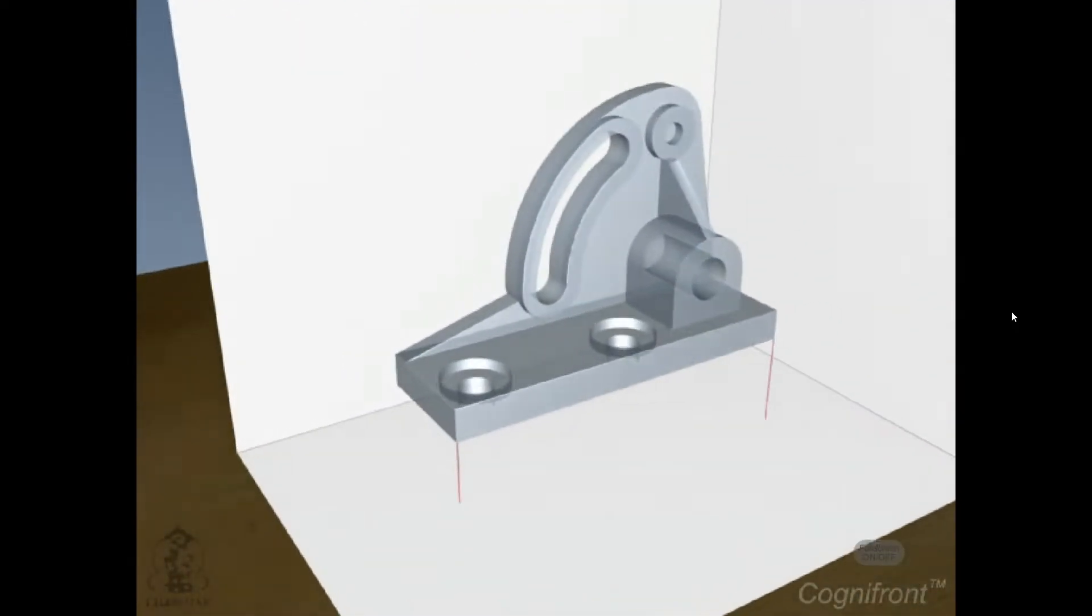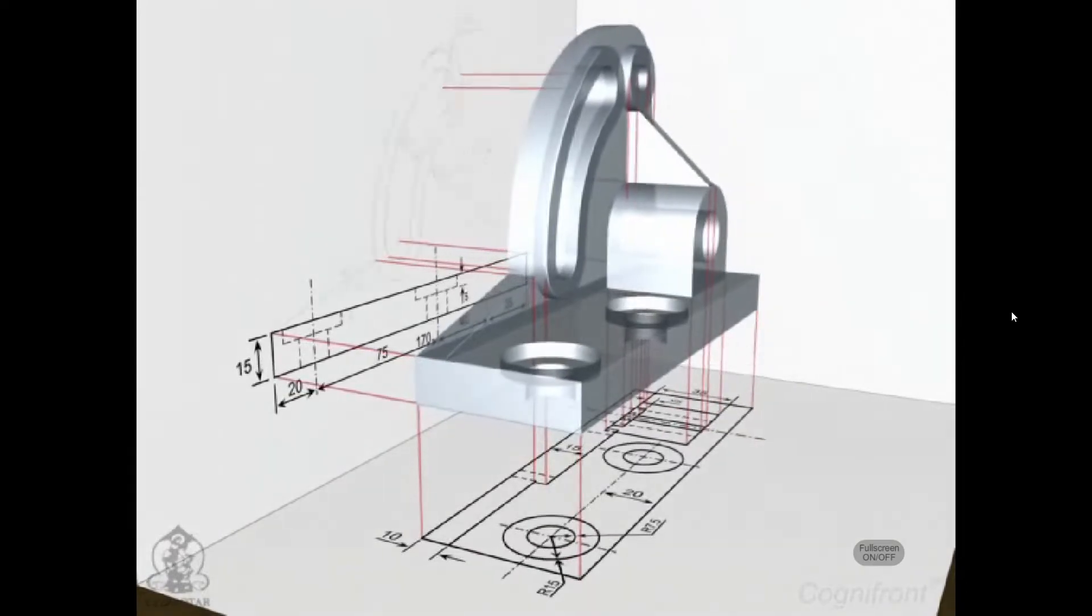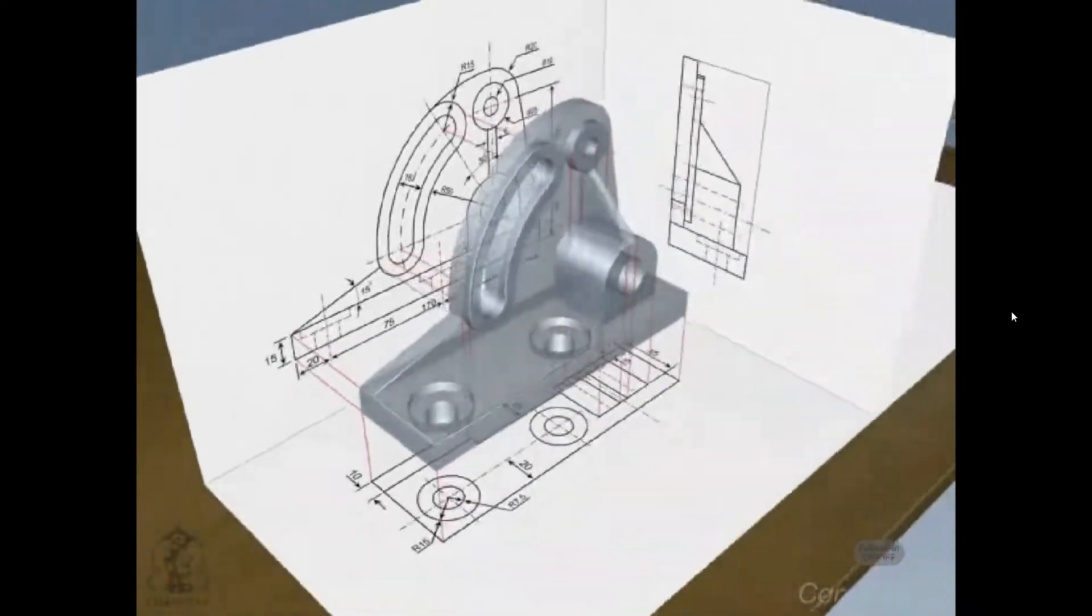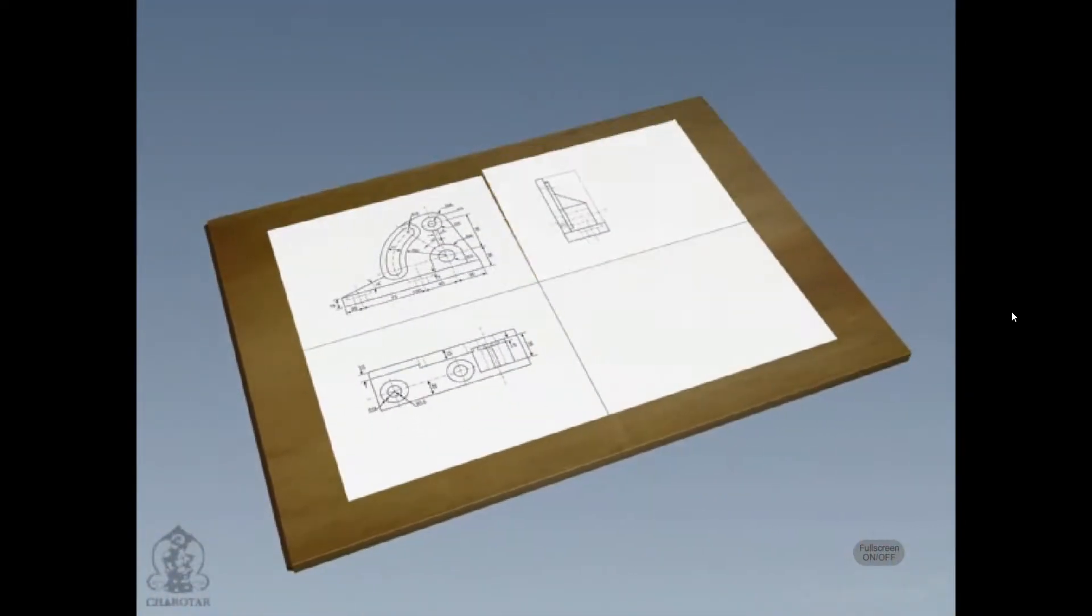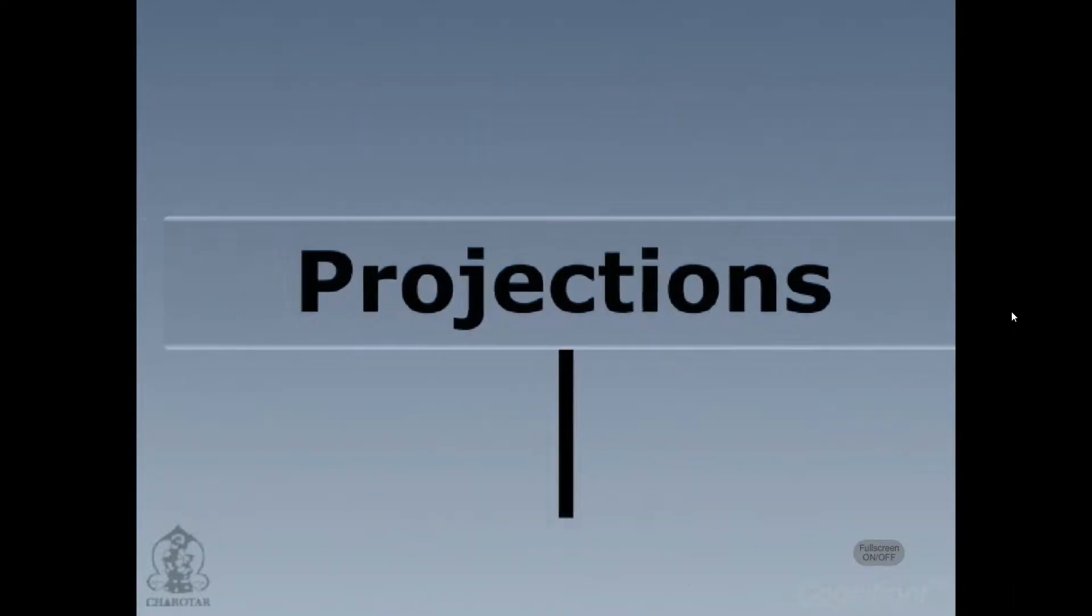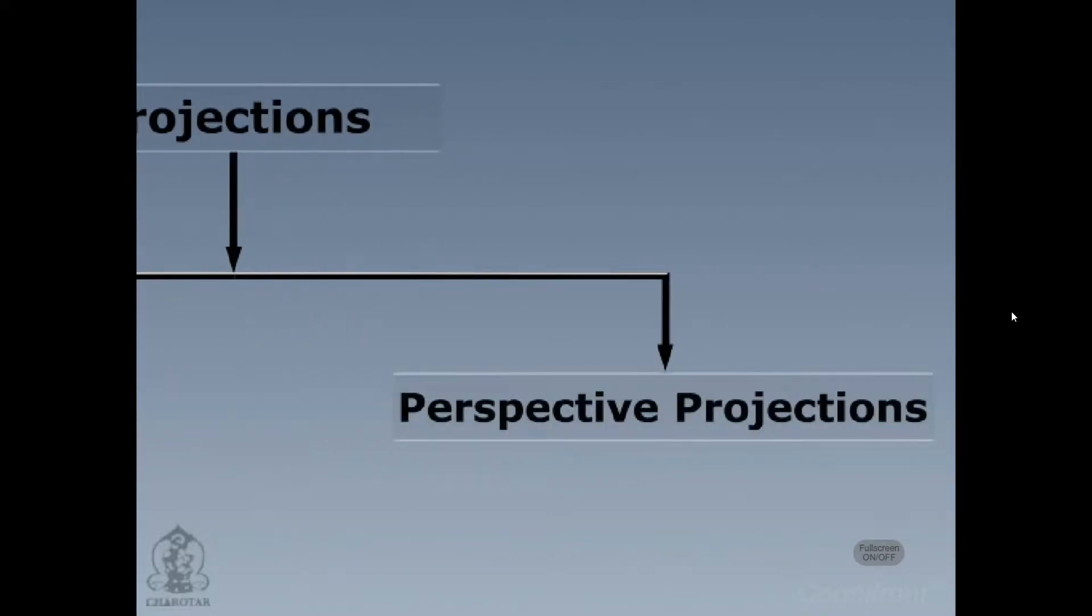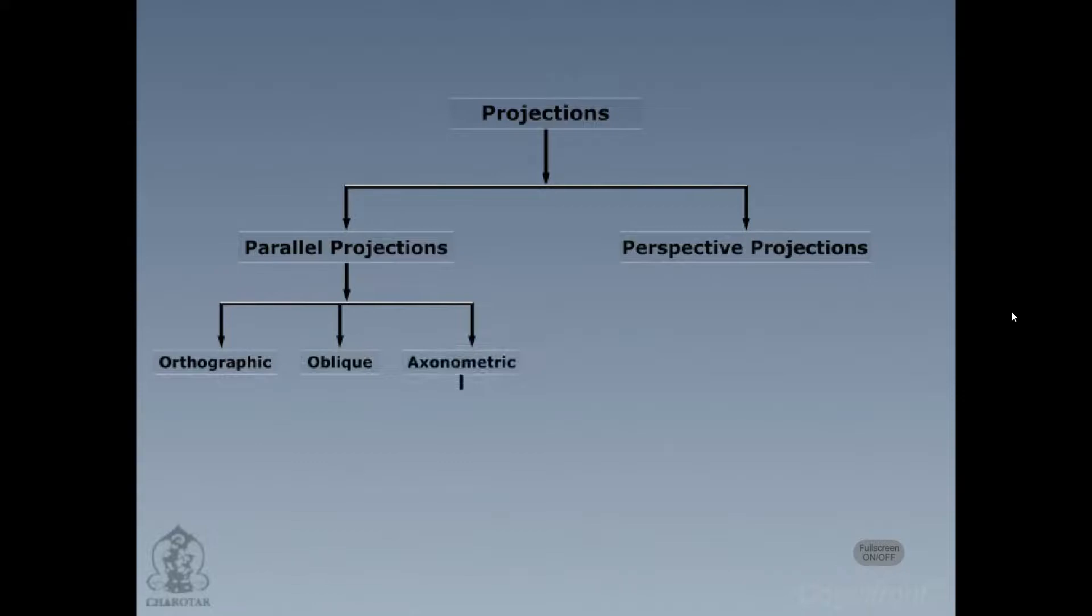The word projection means to throw forward. It is a process of plotting an object or entity on imaginary planes. Projection has two types. First is parallel projection and second is perspective projection. Each of these in turn has further subtypes.